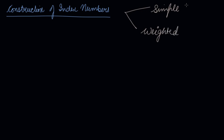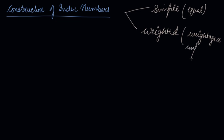In simple index number, all the goods and services are considered equal. Whereas in weighted index number, the weightage or the importance is given to the different index numbers. So, there are two types of index numbers.